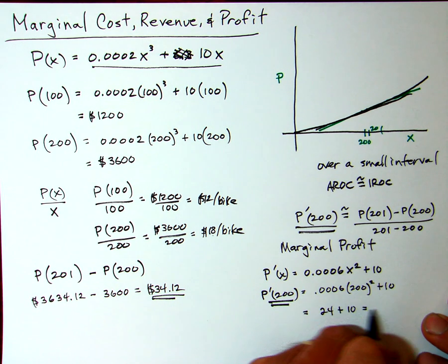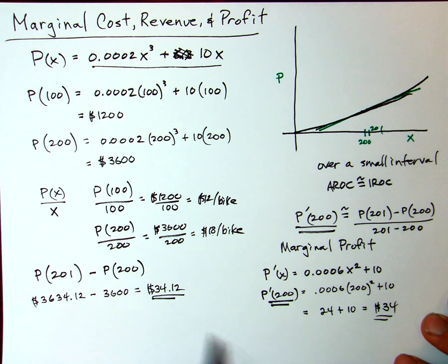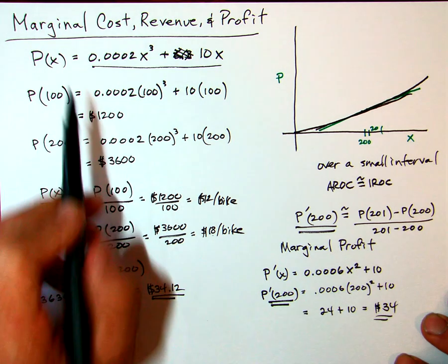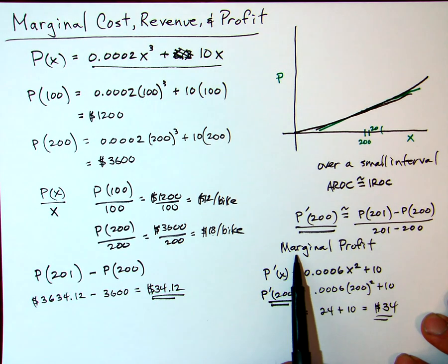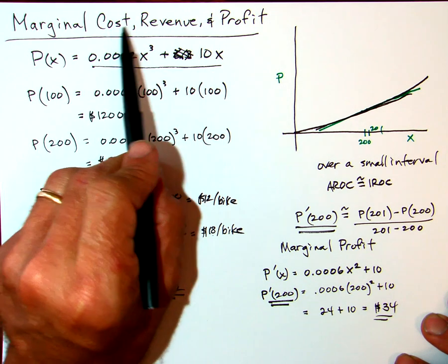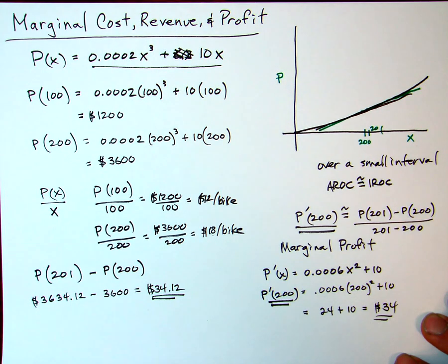You see that this is a very good estimate of what we got when we found exactly using this difference. So that's the idea behind the marginal—we can use marginal, whether it be marginal profit, marginal cost, marginal revenue, to find out how these quantities, cost, revenue, and profit, are changing right at one specific point.